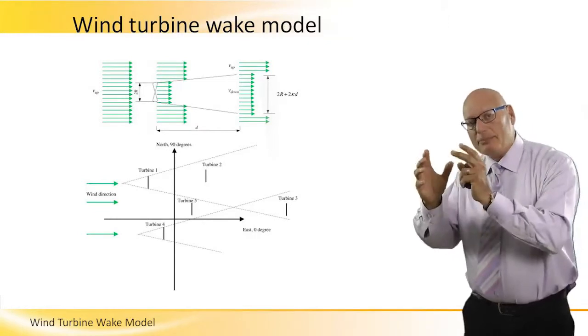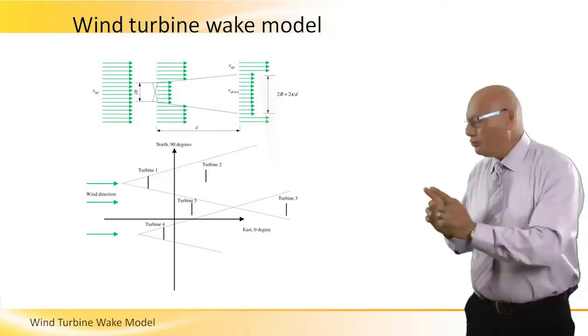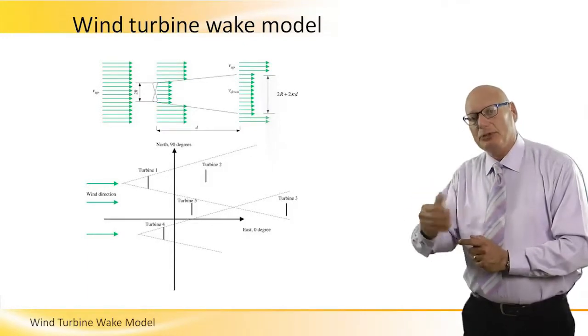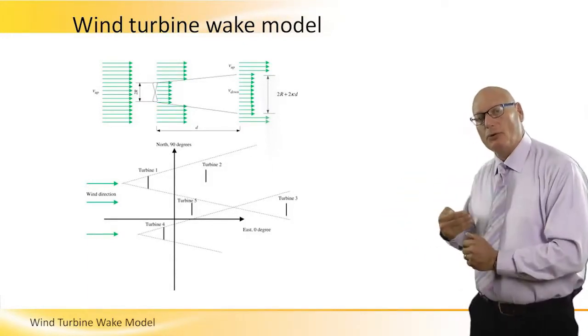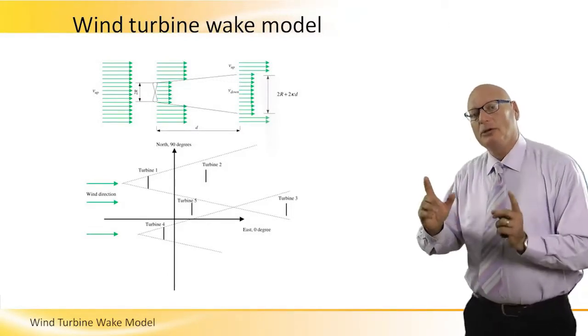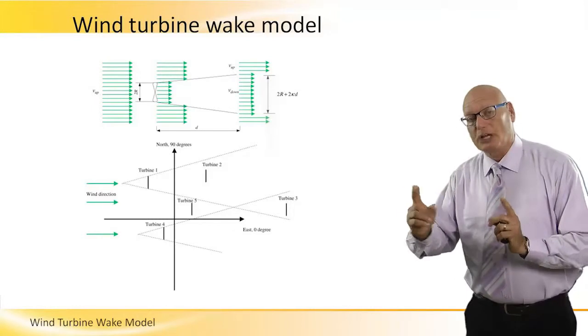And the rule of thumb says that we need to keep distance of five turbine diameters between the front row and the row which is in the back. Five turbine diameters, rotor diameters.